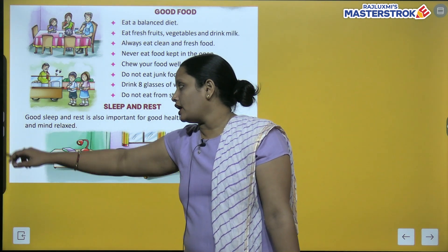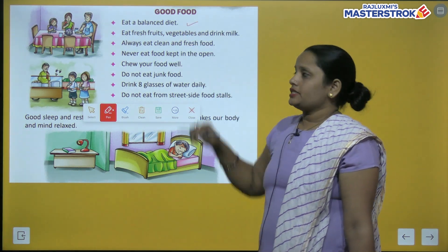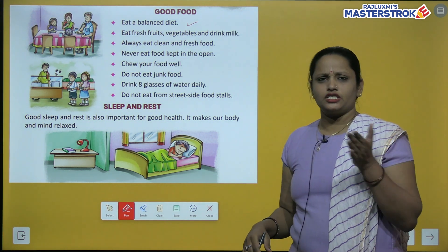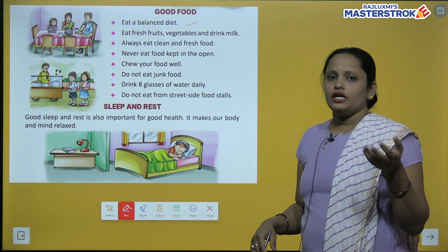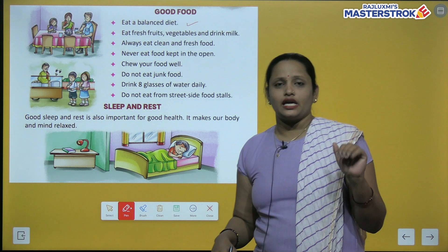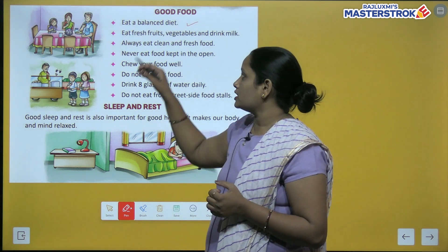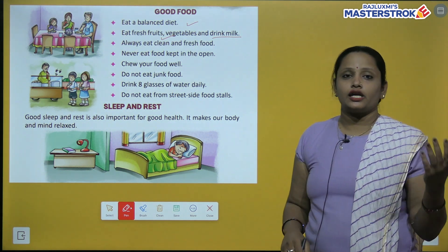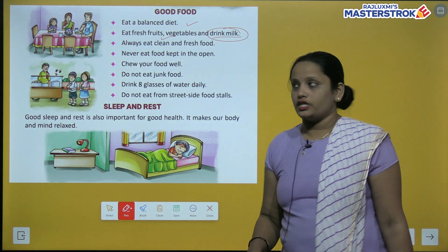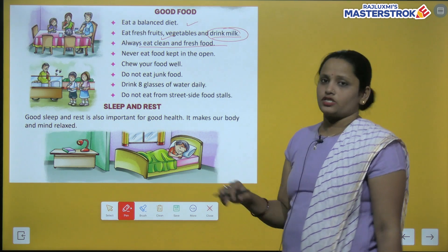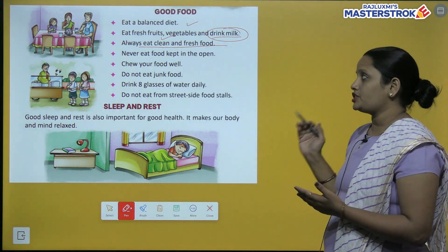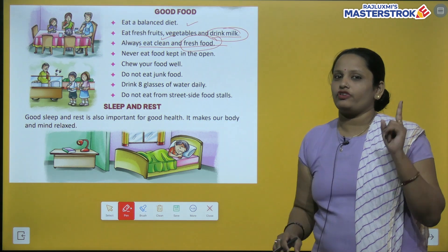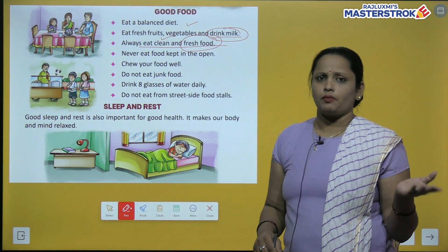Now, what is good food? Eat a balanced diet — we should eat a balanced diet and not eat unhealthy food. We should eat vitamins, minerals, and protein in proper amounts. Eat fresh fruits, vegetables, and drink milk. Always eat clean and fresh food — not food that has been kept since yesterday.